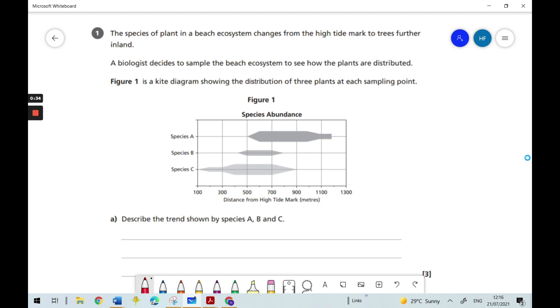Now let's have a look for the command word and I can see it's the word describe. So in this question, we're being asked to give an account of the distribution of the three different plant species A, B and C.